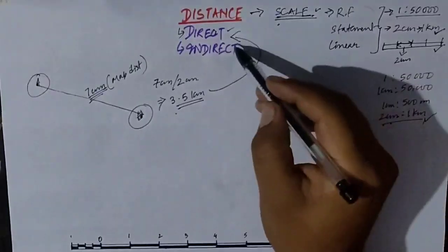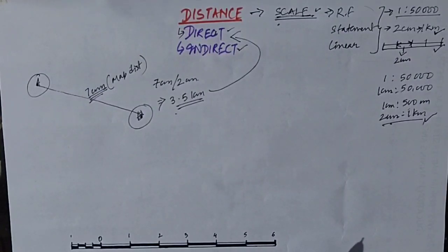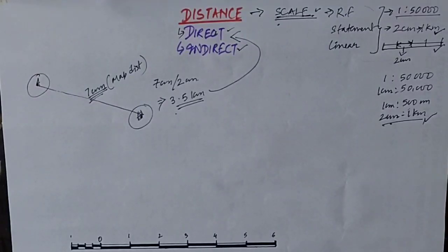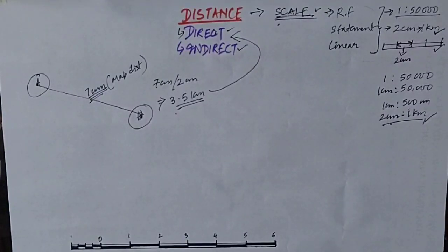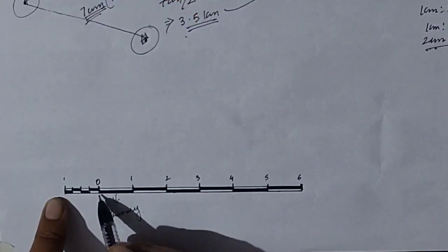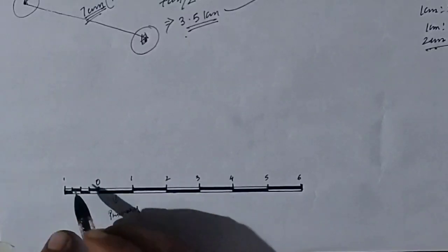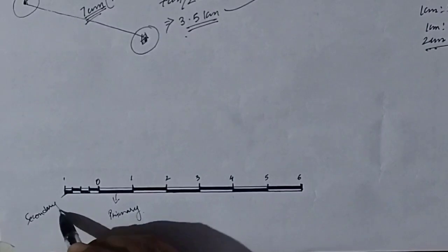The next thing I will teach is indirect distance. For indirect distance, we need the graphical or linear scale. The linear scale has already been drawn here — if you look just below the topographical map, you will find the same kind of scale. Each division is 2 centimeters representing 1 kilometer — these are called primary divisions. The zero starts from the second line, so the first part is divided into smaller parts called secondary divisions.